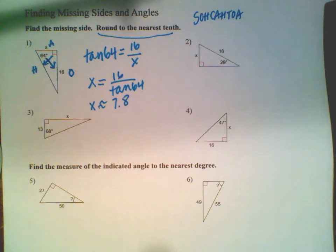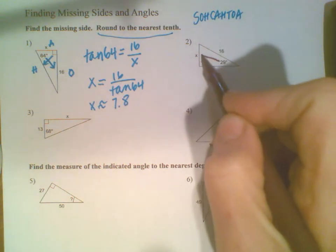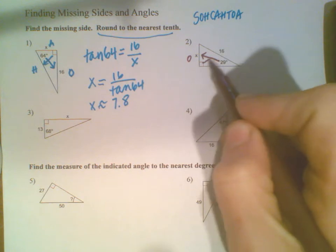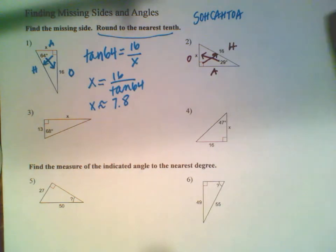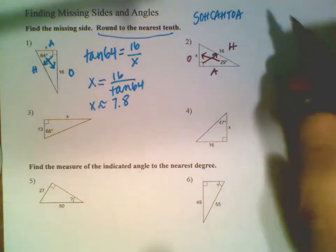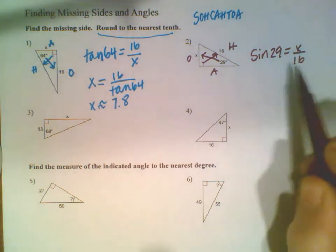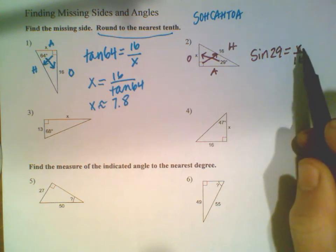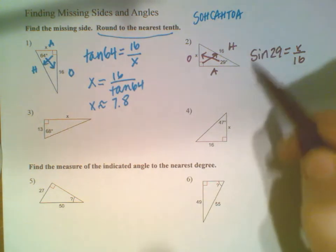Same thing for the next one. The angle 29 is given. Across from that is my opposite, across from the right angle is the hypotenuse, the remaining side is adjacent. The opposite and hypotenuse are marked, which means I use sine. So sine of the angle equals the opposite over the hypotenuse.